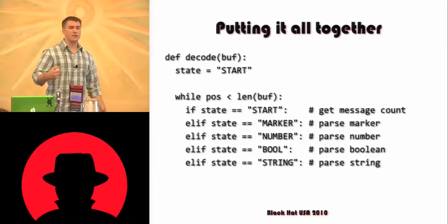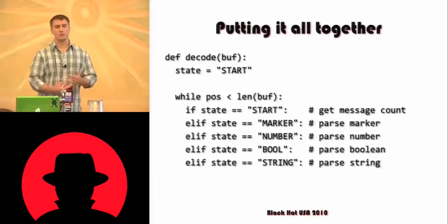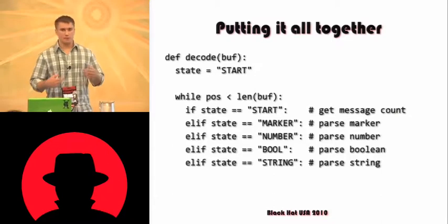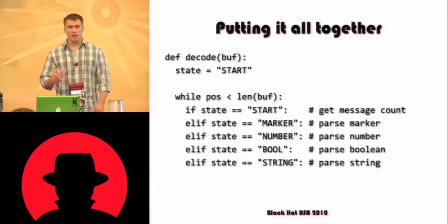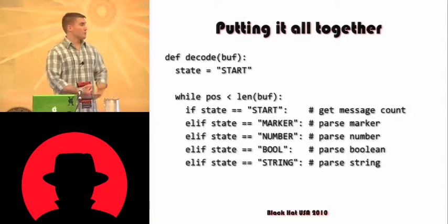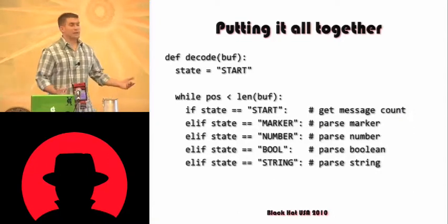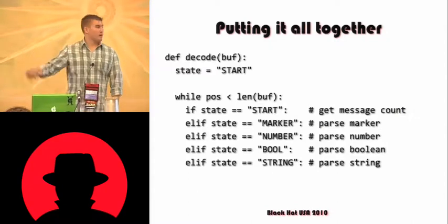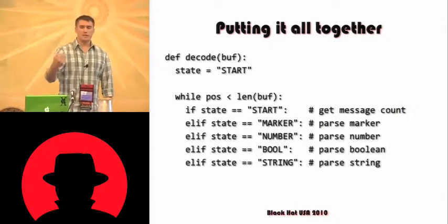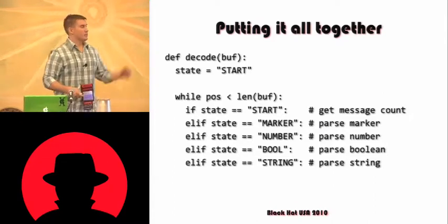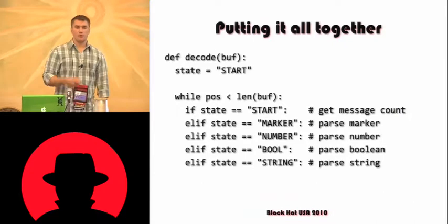So when we actually create all these methods for parsing booleans, numbers, strings, and other maybe more complex objects that your binary protocol actually implements, basically this is what it's gonna end up looking like. We iterate over every byte in a string, and based on the type marker that we run into, we do the associated protocol parsing.